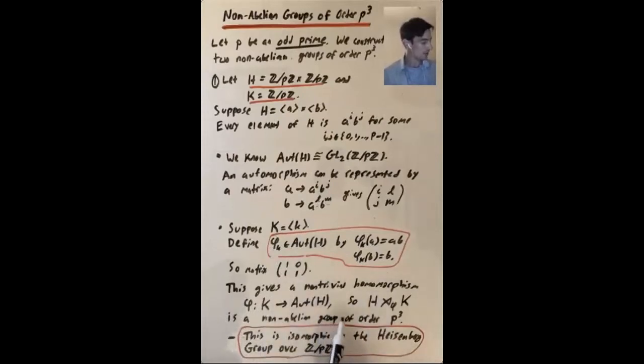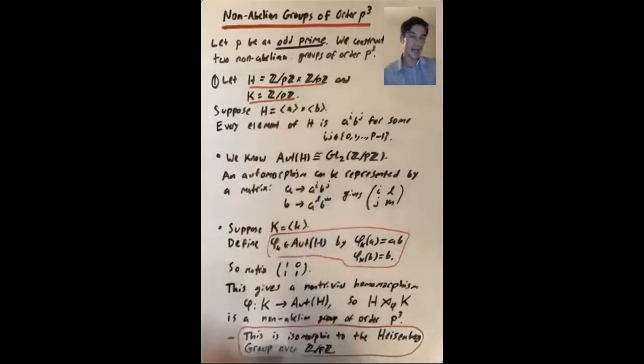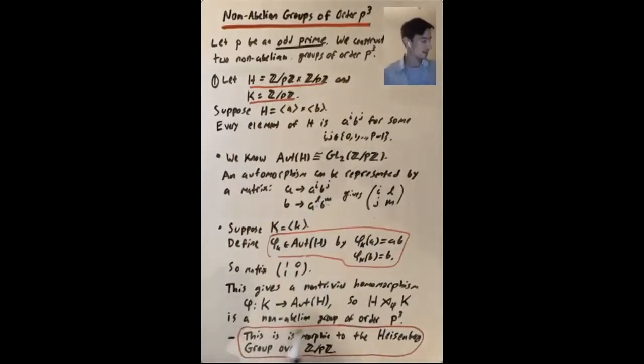So what does that mean? We have a non-trivial homomorphism, so that means that the semi-direct product of H and K with respect to phi is a non-abelian group of order equal to the product of the orders of H and K. So p squared times p, this is a non-abelian group of order p cubed.